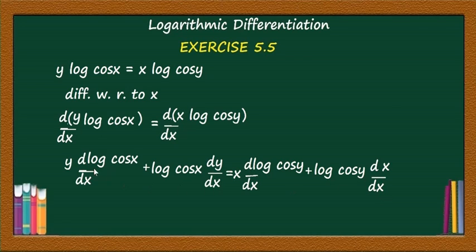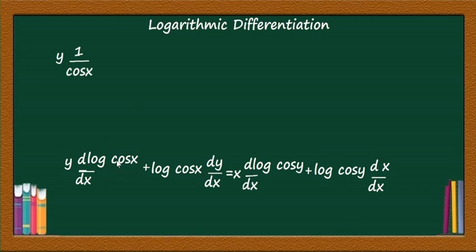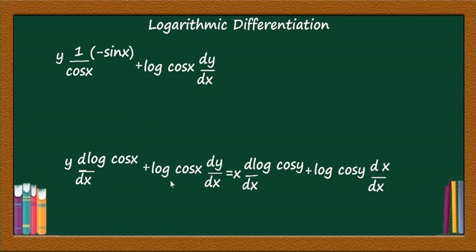What is the derivative of log(cos x)? Using the chain rule, it is 1/cos(x) into the derivative of cos x. Taking u = cos x, the derivative is 1/cos(x) · (−sin x), which equals −tan x. So the left side becomes −y·tan(x) + log(cos x)·dy/dx.